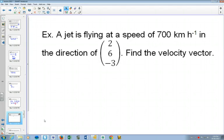So we've got 700 kilometers per hour. We know the direction. Why is that direction vector not the velocity vector? Because usually the direction vector is the same as the velocity vector, but here the magnitude of the direction vector is not equal to the speed.